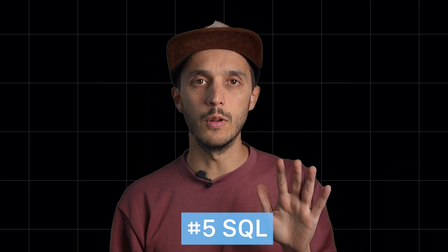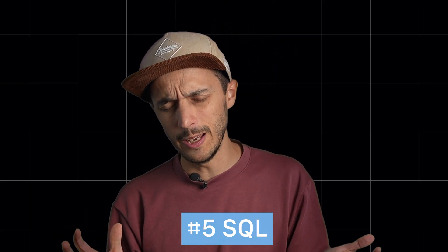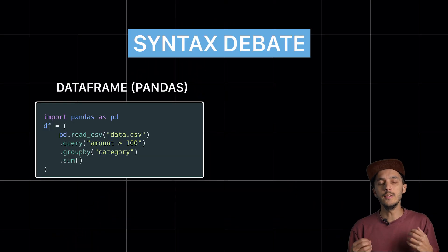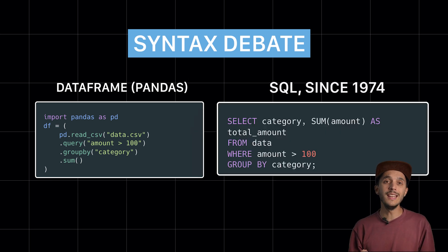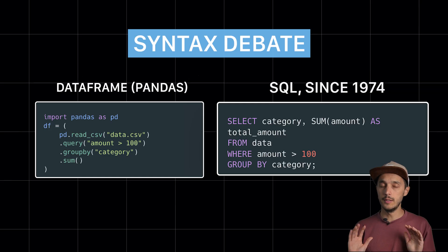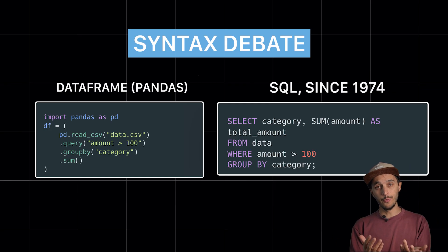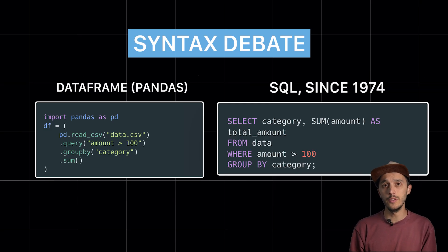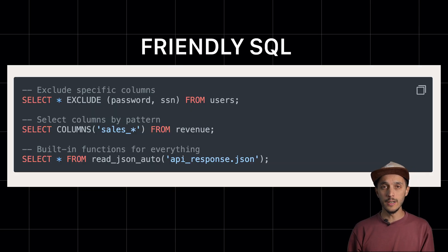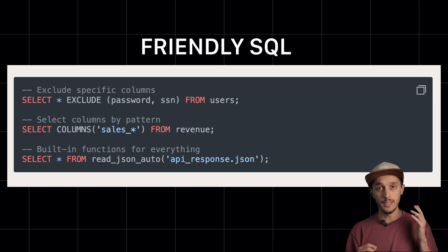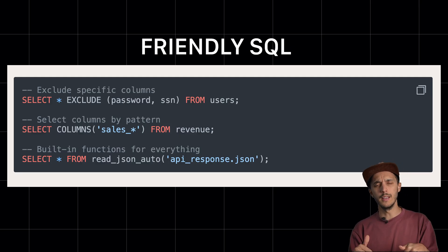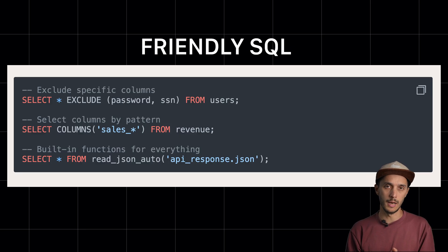Point 5: SQL. Some of you might think DataFrames look cleaner, and look, this is partially a syntax preference. But SQL is universal — it's been around since 1974 and it's here to stay. Your data analyst knows it, your backend engineers know it, and you'll thank yourself when you come back to this code in six months. Plus, DuckDB has a friendly SQL syntax that makes common tasks ridiculously easy, with a lot of built-in functions for everything. I'll put a link in the description regarding friendly SQL if you're curious.